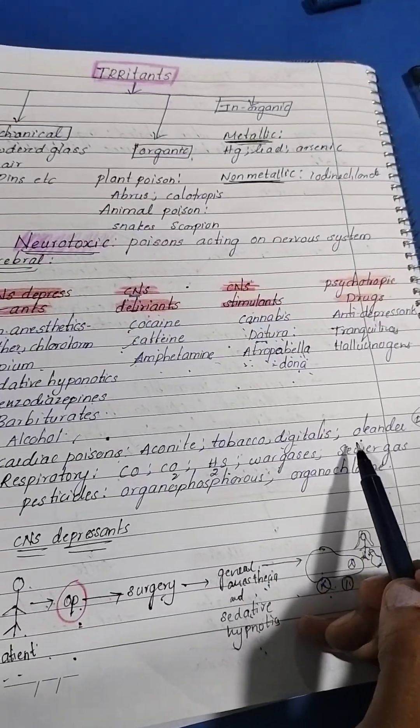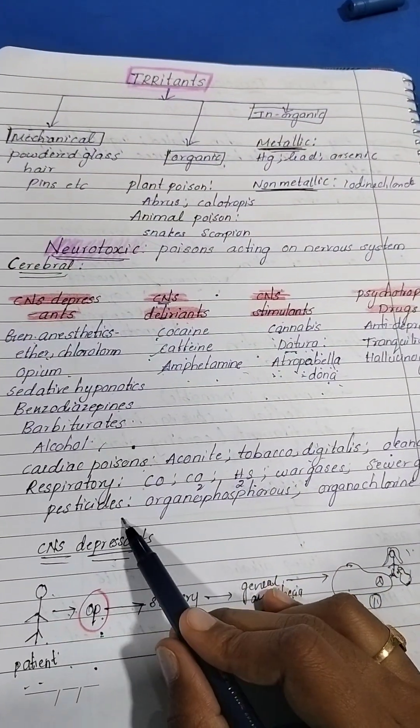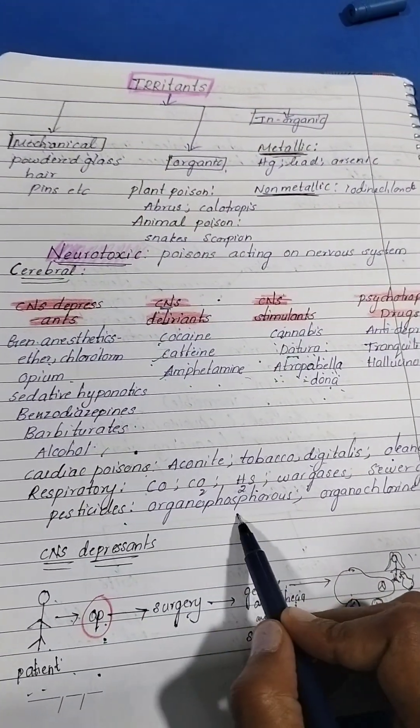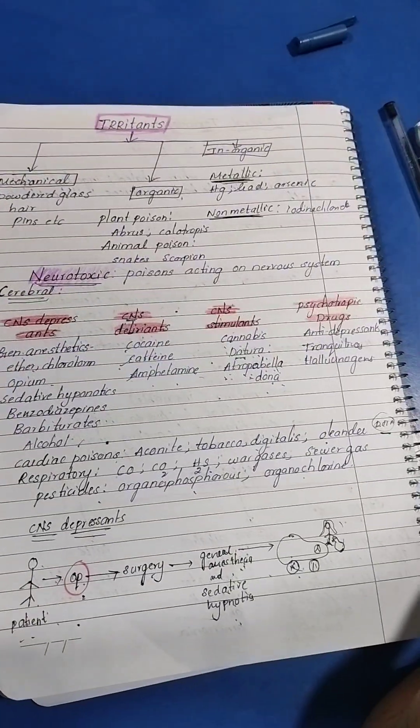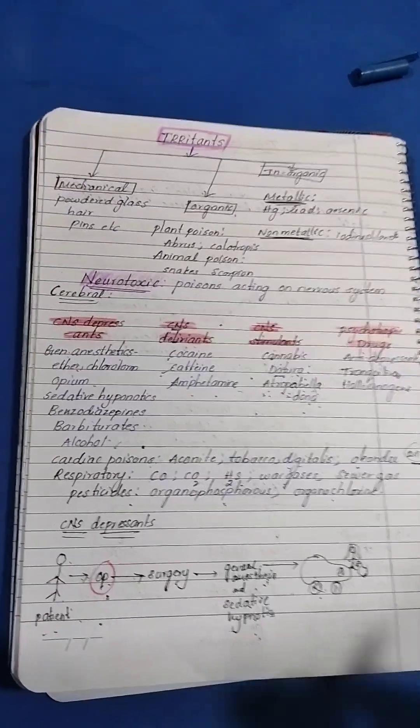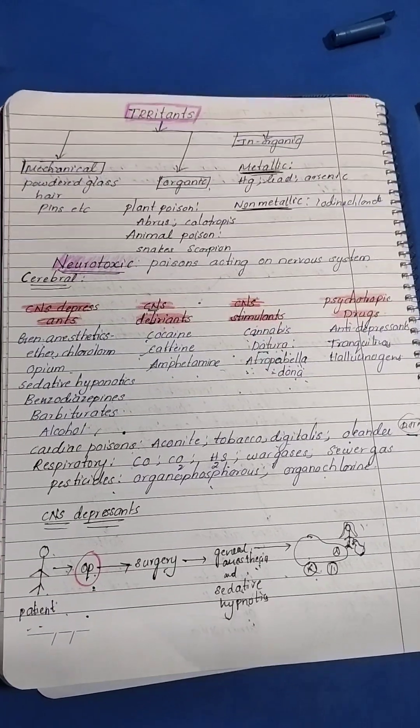Gases and pesticides like organophosphorus and organochlorine. That's it guys, I hope you liked this video. Thank you so much for watching.